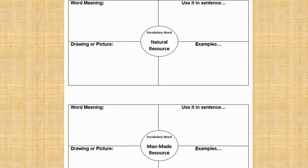Here's your Frayer model. Notice that in the middle you have your vocabulary words: natural resource and man-made resource. You're going to be required to write the word meaning, use it in a sentence, draw a picture, and give an example.